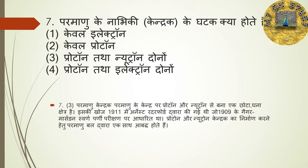अगला question: परमाणु के नाभिक के अंदर के घटक क्या होते हैं? चार options हैं — केवल इलेक्ट्रॉन, केवल प्रोटॉन, प्रोटॉन तथा न्यूट्रॉन दोनों। यह बहुत ही आसान question है। The right answer is: Proton and Neutron.